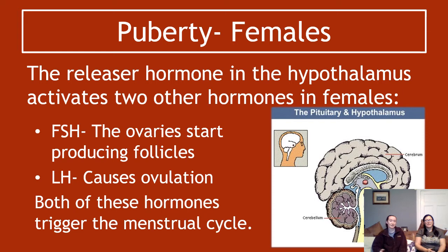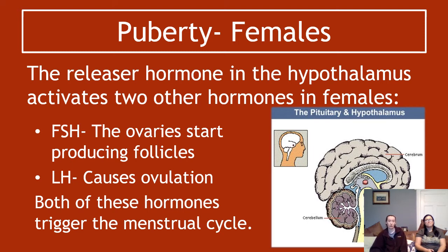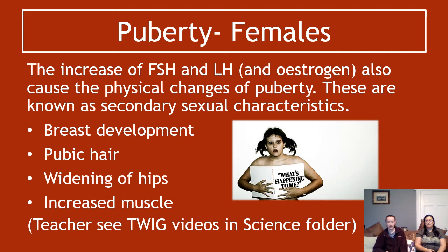In terms of puberty in females, similar hormones are involved. There is still the releaser hormone, which triggers the puberty hormones. In females there is FSH, which similarly to males allows the ovaries to start producing follicles. There is also LH, which causes ovulation. Both of these hormones essentially trigger the menstrual cycle — the cycle that results in a period — and they are stimulated by the releaser hormone. Secondary sexual characteristics in females include breast development, pubic hair, widening of hips, and increased muscle — some similar ones to males as well.